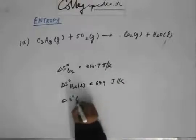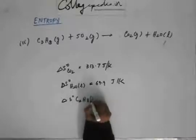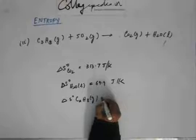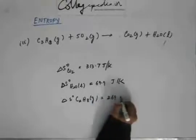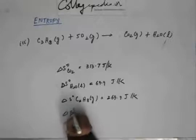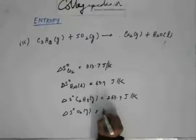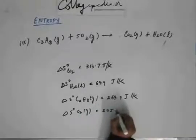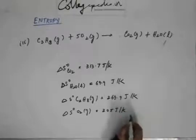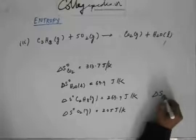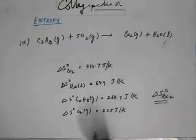Delta S not of methane in gaseous, propane sorry, in gaseous state is 269.9 joule per kelvin. And delta S not of oxygen, of course in gaseous state is 205 joule per kelvin. Now you calculate the delta S for reaction at standard state. Now in order to calculate delta S for the reaction in standard state, don't forget to balance the chemical equation. If you forget to balance the chemical equation, then your answer would be wrong.